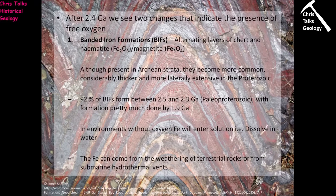After 2.4 billion years, we see two primary changes to the rock record indicating the presence of free oxygen. The first is banded iron formations, sometimes referred to as BIFs. A banded iron formation consists of alternating layers of chert and hematite or magnetite — a chert layer, which is SiO2 (silica), and these grey layers of iron oxide minerals, primarily hematite and magnetite. You have this rhythmic layering: iron-rich layer, chert layer, iron layer, chert layer, and so on.